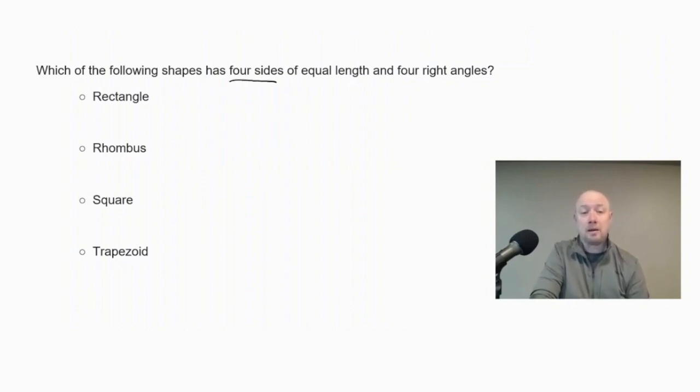But a rectangle and a trapezoid don't necessarily have four equal lengths, so those two choices are out. That leaves us with rhombus and square. A rhombus has four sides of equal length, and so does a square. A square is a certain type of rhombus, and what separates it is that it is a rhombus that has four right angles also. So a square is a subgroup of a rhombus, so that means our correct answer would be a square.